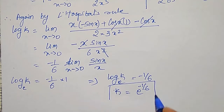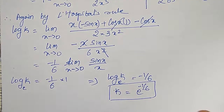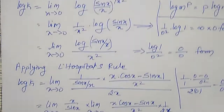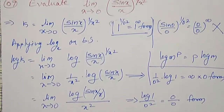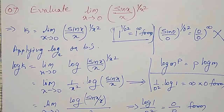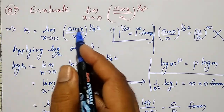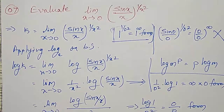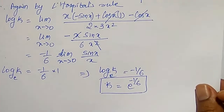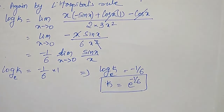So k, which is the limit as x tends to zero of (sin x / x) raised to 1/x², equals e^(−1/6). This is a finite value, and we stop here.